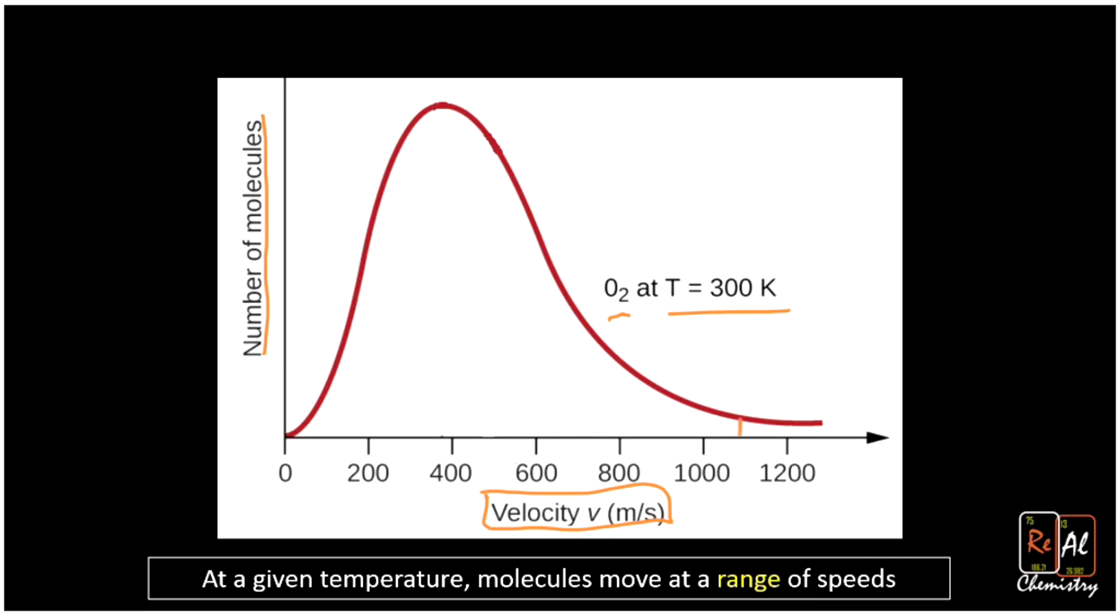Some of them are moving really fast, 1,100 meters per second. Some of them are moving pretty slow, 100 meters per second. And the bulk of them are moving at around our average speed of maybe 380 or 400 meters per second. These molecules are moving at different speeds, some fast, some slow. The average kinetic energy is what determines this temperature. Average kinetic energy determines temperature.